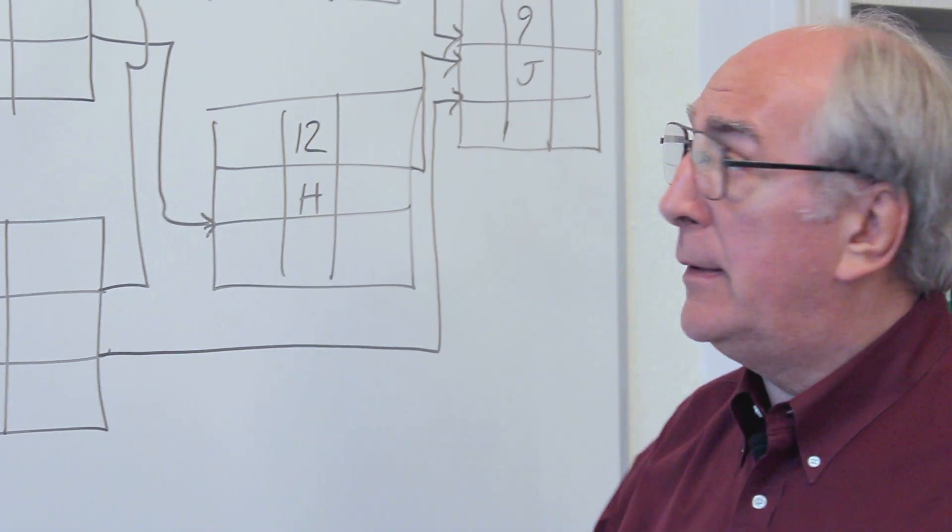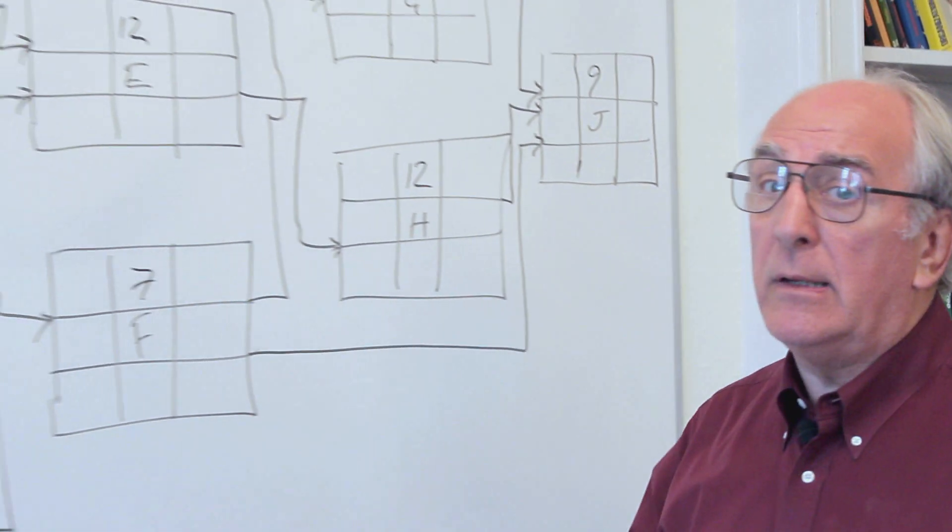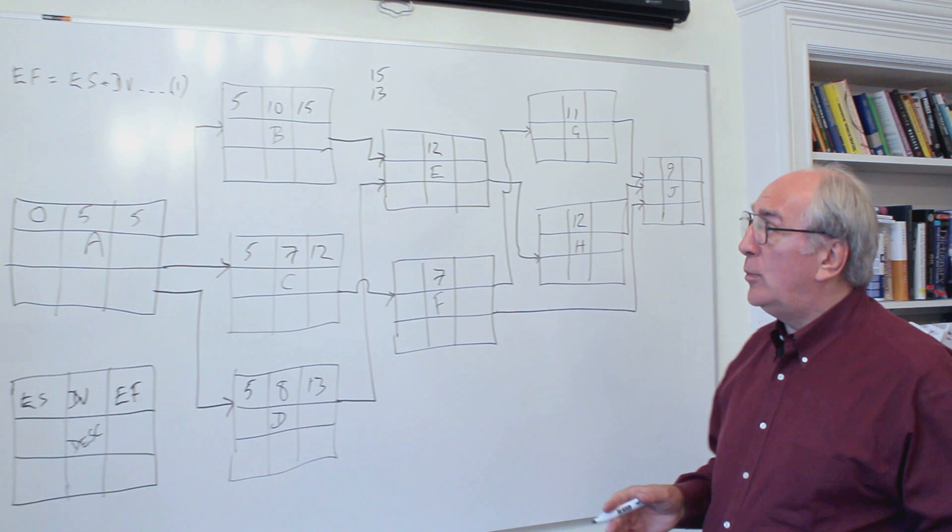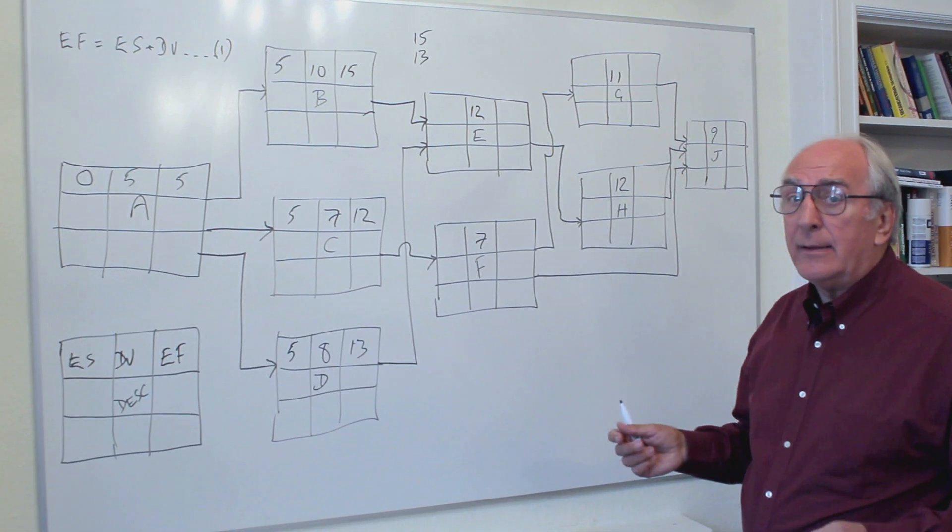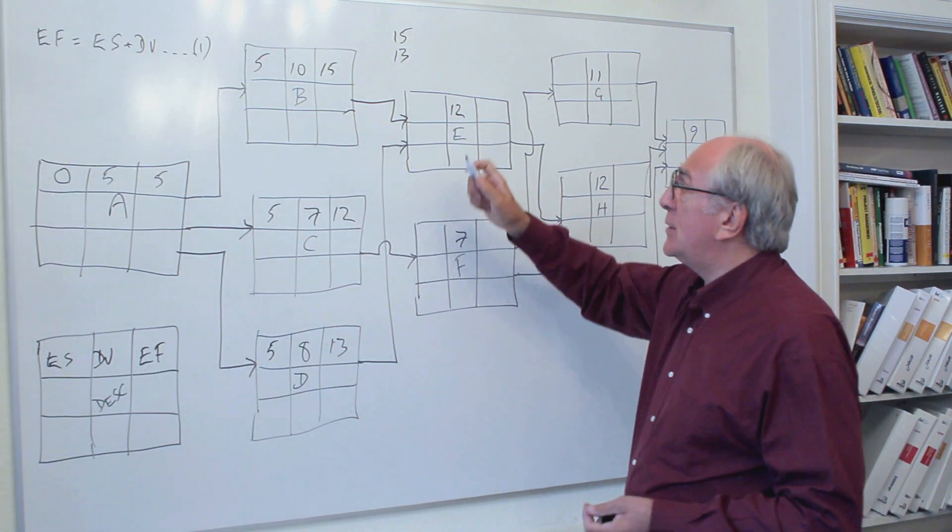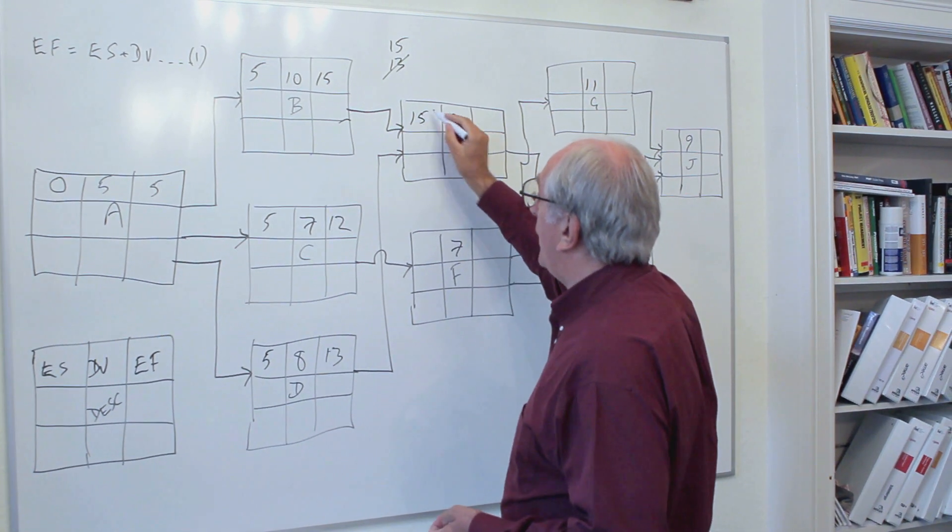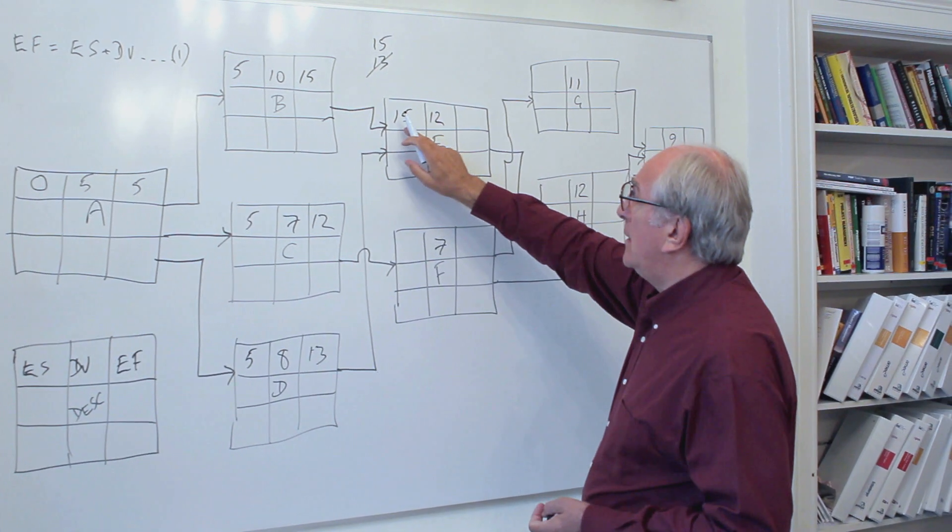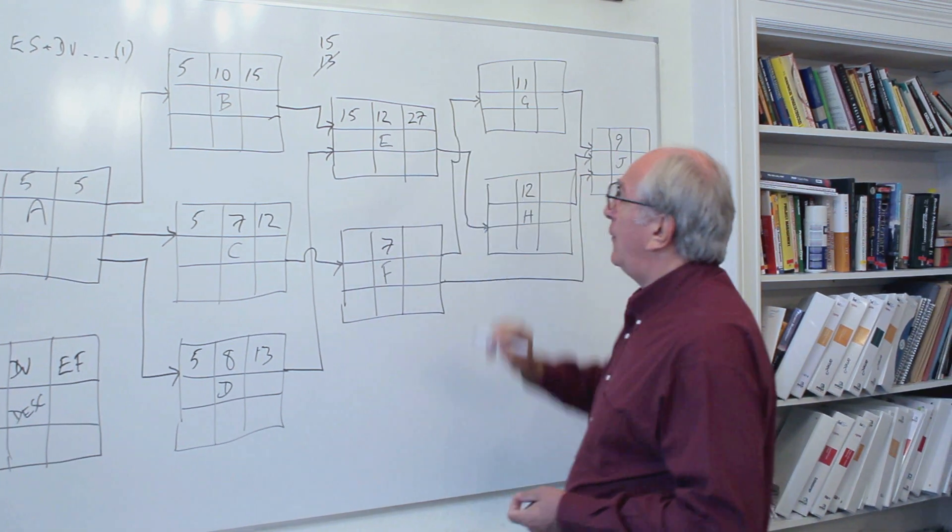Since we've said that we have to have B and D done before we can start E, then quite clearly we can't start E while B is still operating. So we have to have finished D and B in order to get job E started. We must take the maximum of that choice there. So we'll put that 15 in here. 15 plus the duration 12 for E gives us 27 for the early finish of E.